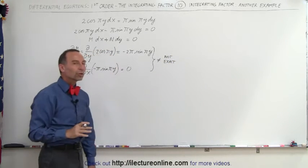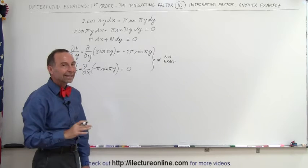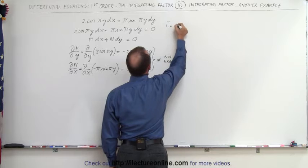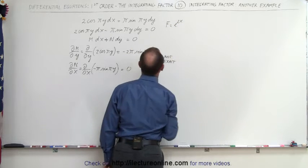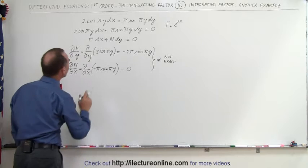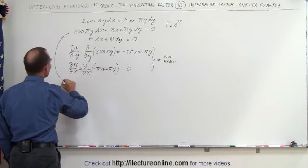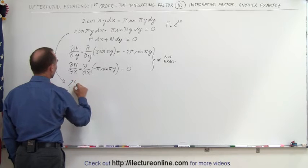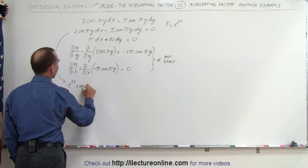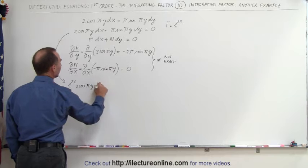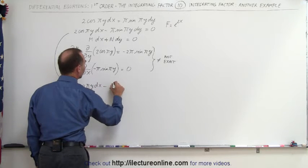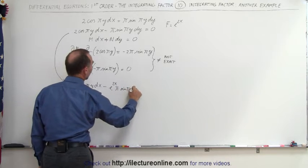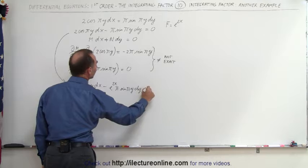So we're going to multiply both sides of the equation by the integrating factor. In this case, the integrating factor can be assumed to be e to the 2x. Multiplying through gives us e^(2x) times 2 cos(πy) dx minus e^(2x) times π sine of πy dy equals zero.